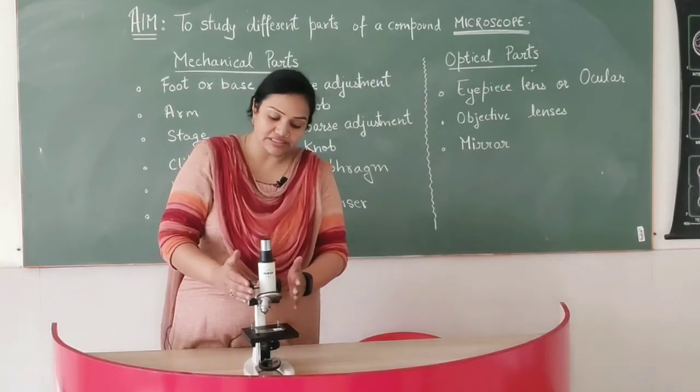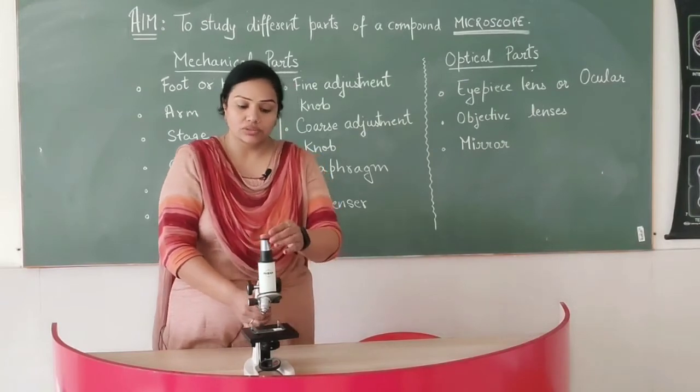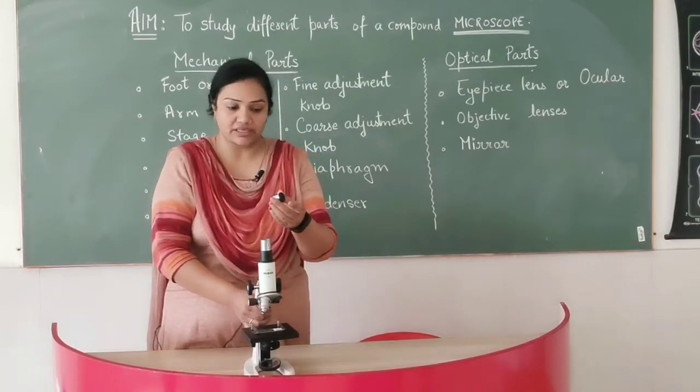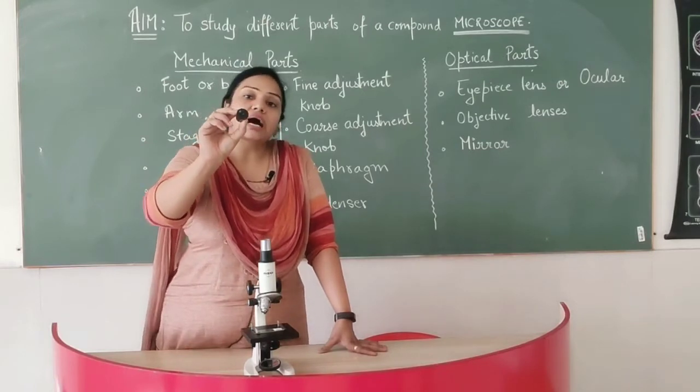So these were all the mechanical parts of the microscope. Now coming to the optical parts of the microscope. See the first part. This is called eye piece.